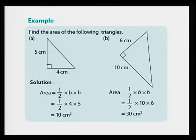Now let's see some examples. We have two different examples here. In the first one, the area is half times base times height — half times 4 times 5, which makes 10 centimeters squared. In the second one, the area is half times base times height, equal to half times 10 times 6, equal to 30 centimeters squared.